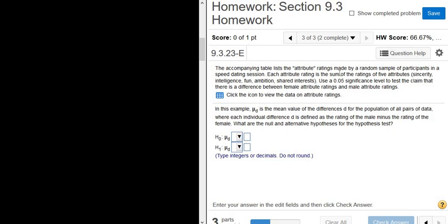The accompanying table lists the attribute ratings made by a random sample of participants in a speed dating session. Each attribute rating is the sum of the ratings of five attributes. Use a 0.05 significance level, that's our alpha.